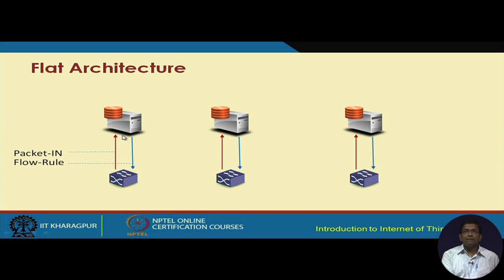In the flat architecture, the switch and the controller are logically one hop away. The switch sends a packet-in message to the controller if it does not already have the flow rule for the particular flow it has received. The controller sends back the flow rule — the instruction for how the switch should treat that particular packet. The controller knows how the different flows and packets are going to be handled.